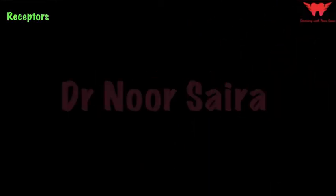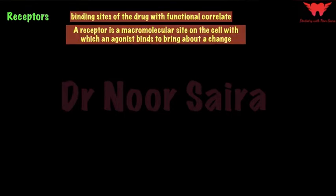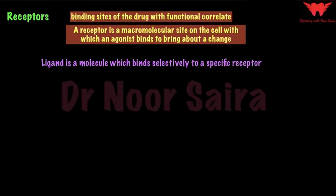These are binding sites of the drug with some functional correlate, which means if the drug comes and binds to the site there will be some activity that happens. A receptor is a macromolecular site on the cell with which an agonist — a drug which can bind to this receptor — binds to bring about a change. This agonist which comes and binds to the receptor is called a ligand; a ligand is a molecule which binds selectively to a specific receptor.